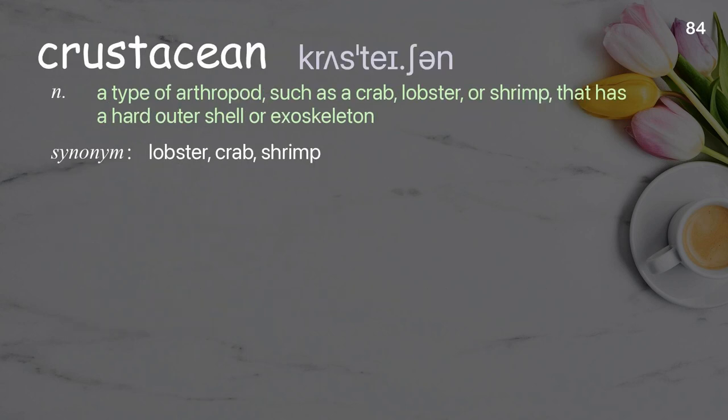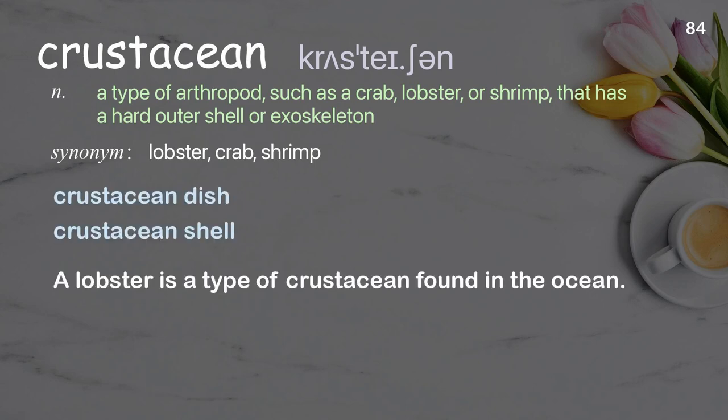Crustacean. A type of arthropod, such as a crab, lobster, or shrimp, that has a hard outer shell or exoskeleton. Examples: crustacean dish, crustacean shell. Sentence: A lobster is a type of crustacean found in the ocean.